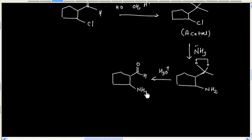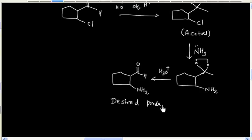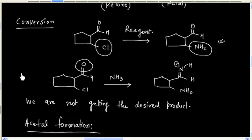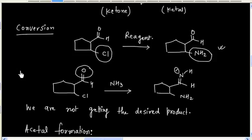We will have the desired product. You can see that the reversibility of acetal formation can be used as a protecting group. First, aldehyde and ketone can be converted into acetal or ketal, and then we can do the desired reaction.